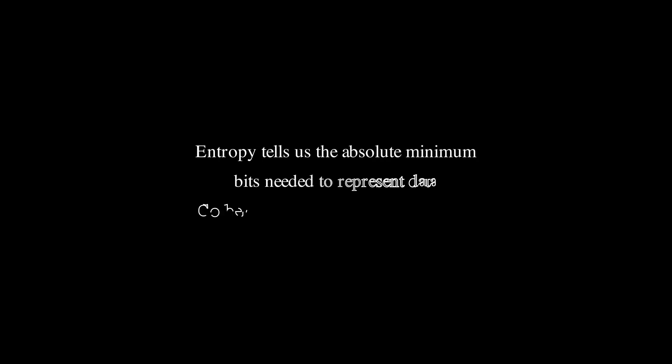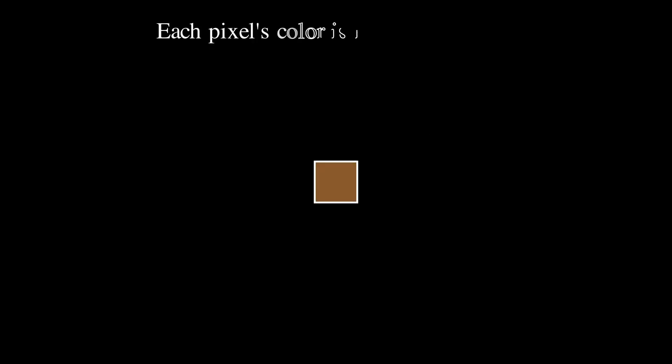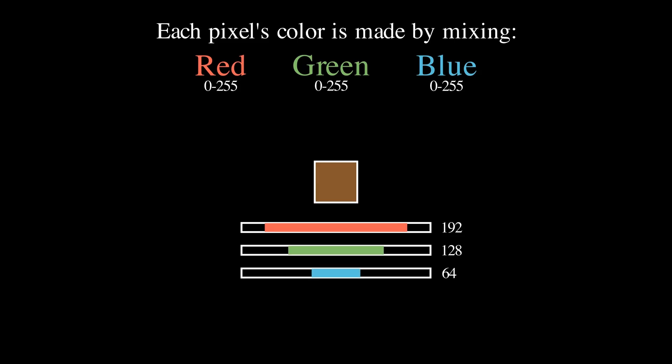Again, entropy tells you the minimum amount of storage you would need for some information. Anything less and some data is being left out. Say you have an image that's 1280 pixels by 720, in total 921,600 pixels. Each pixel stores three numbers: red, green, and blue, and each number takes 8 bits.